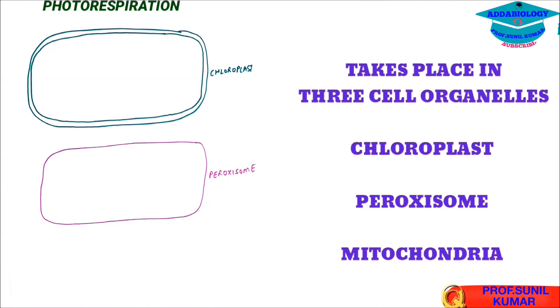Now third cell organelle that we are going to draw will be mitochondria. While drawing the mitochondria we need to be very much careful, it is double membranous and it is going to show the inner folds that we call it as cristae. So these are the three cell organelles that we need to show. Now what exactly happens?